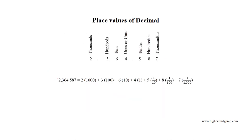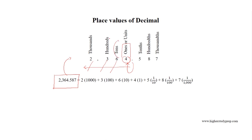If we consider the decimal number 2364.587, we can get that the position immediately before the decimal point is occupied by 4. Therefore, the place value for 4 is ones. As we go left of ones, we will get the digits 6, 3, and 2 consecutively, and for them the place values are tens, hundreds, and thousands respectively. As we go right of the decimal point, we will get the digits 5, 8, and 7 consecutively, and for them the place values are tenths, hundredths, and thousandths respectively.